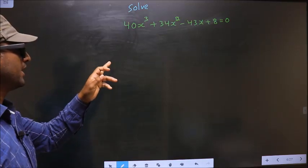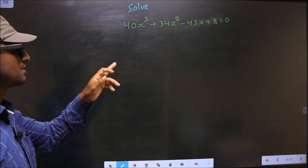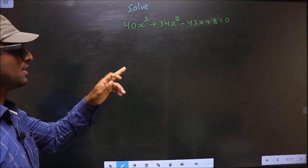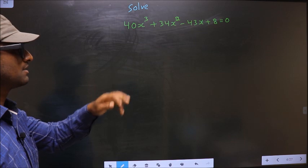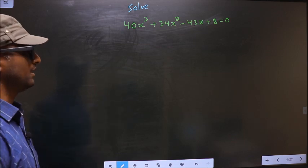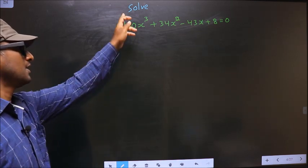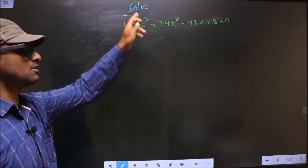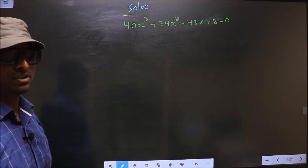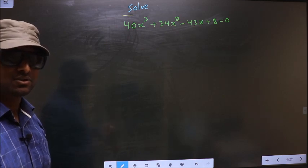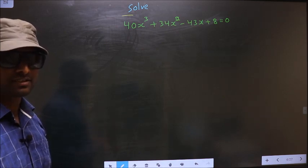Solve 40x cube plus 34x square minus 43x plus 8 equal to 0. Here they told us to solve, so we should find the values of x.